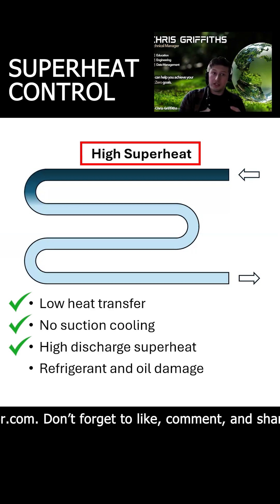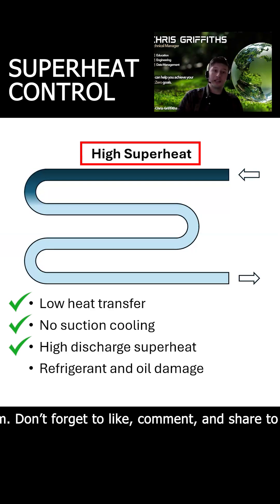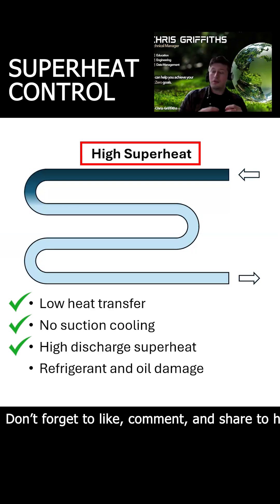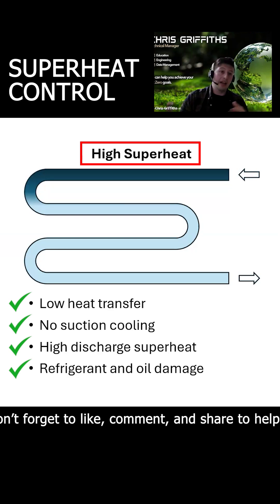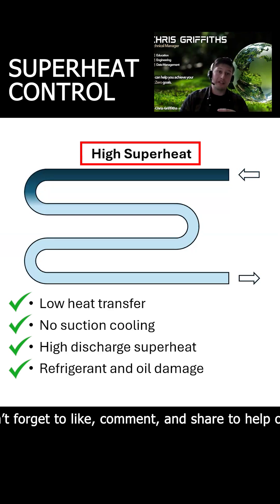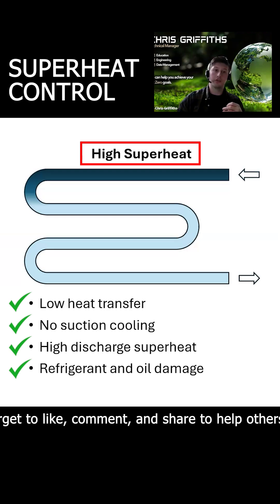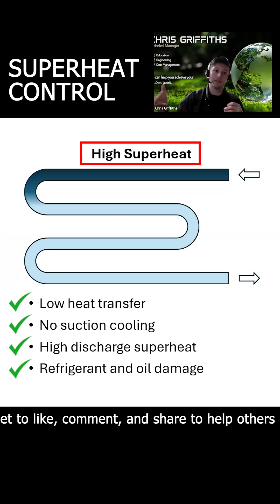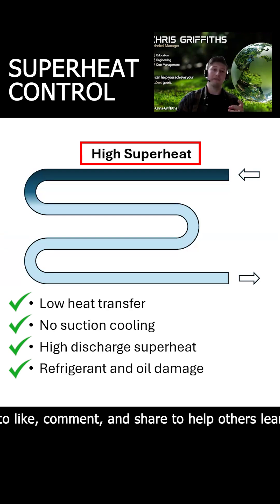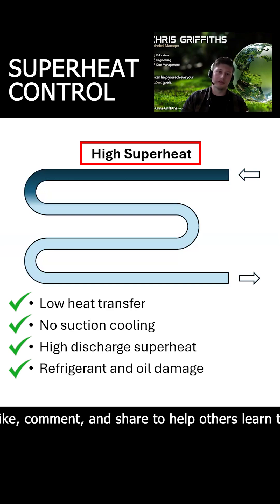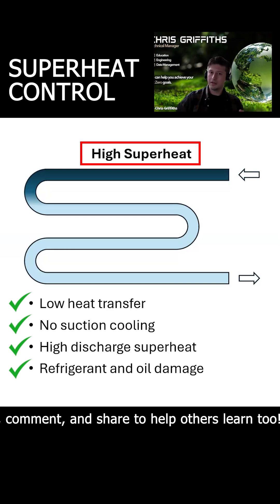That then results in high discharge temperatures and high discharge superheat, which can lead to refrigerants breaking down and oil damage as well. Oil damage is probably much more common on CO2 systems with these high discharge temperatures, rather than the refrigerant breaking down properly, because obviously it's a single chemical compound.